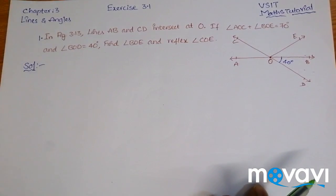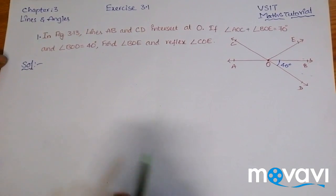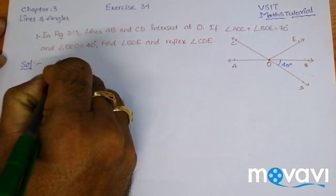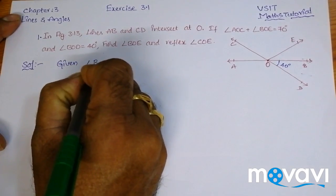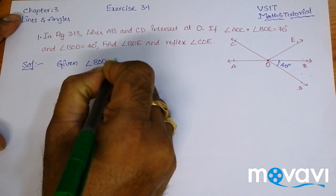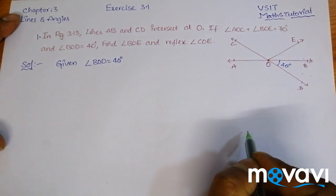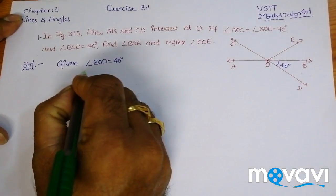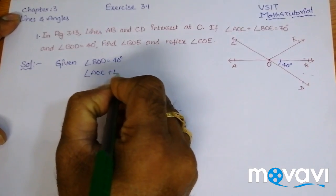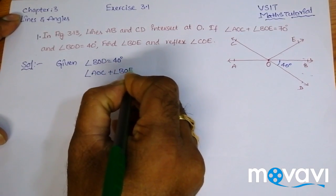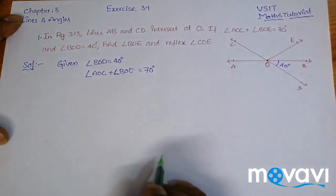Let us start with the given data. Given: angle BOD is equal to 40 degrees, that is this one, and angle AOC plus angle BOE is equal to 70 degrees.